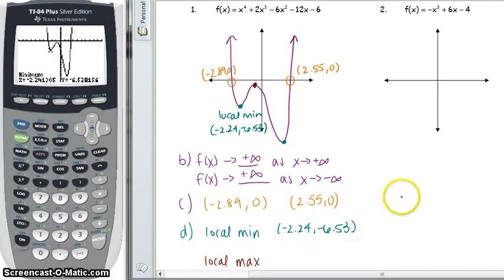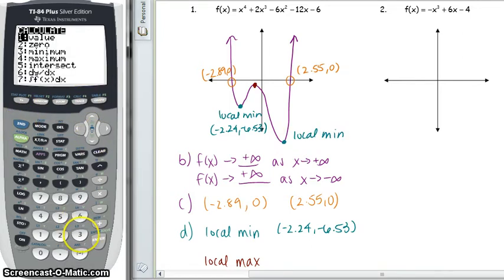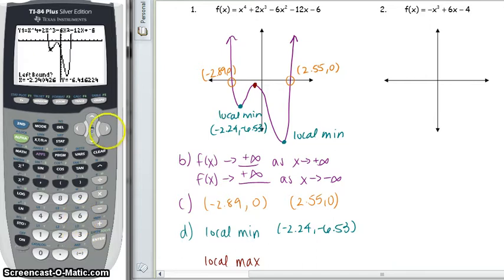So I'm going to write that below. And then we need to find our other local minimum point. So second, trace, again, option number three. So we go over to the right, more towards our minimum point. But we need to stay to the left of it. That's what it wants. So we hit enter.